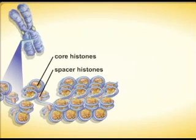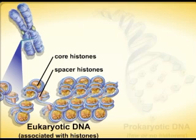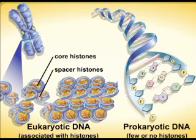Histone proteins associated with the DNA of eukaryotic cells are generally lacking in bacteria but present in archaea. Archaea histones are similar in structure to eukaryotic histones. Small amounts of protein are associated with maintaining the organization of bacterial DNA.